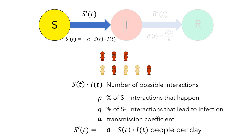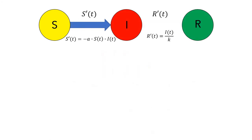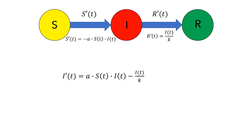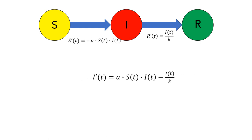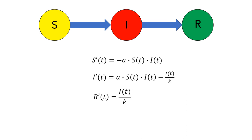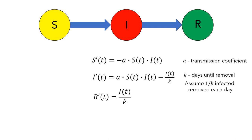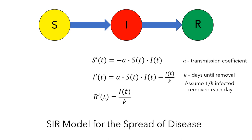Now let's think about the infected population. The infected people are coming from the susceptible group, so the rate at which the infected group grows will be equal to the rate at which the susceptible group shrinks. And the infected people are moving from the infected group to the removed group, so the rate at which the infected group shrinks will be equal to the rate at which the removed group grows. This will all be measured in units of people per day. So now we have a model for all of the rates involved. In the equation for S', the a represents the transmission coefficient. In the equations for I' and R', the k is the number of days until an infected person moves into the removed group, and we're assuming that 1 over k of the infected group is removed each day. Taken together, this is called the SIR model for the spread of disease.